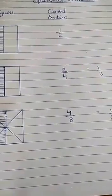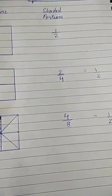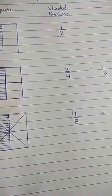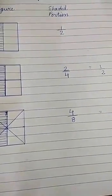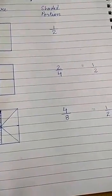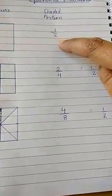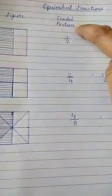Thus, the number of parts in the shaded portion has increased, but the shaded and unshaded portions remain the same. Therefore, the value of the fraction is 1 by 2, total 2 and one portion is shaded.